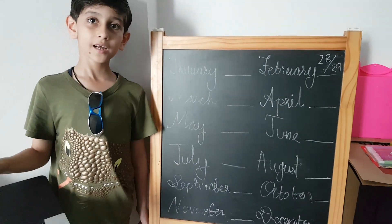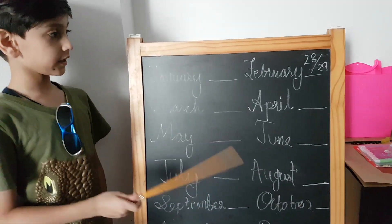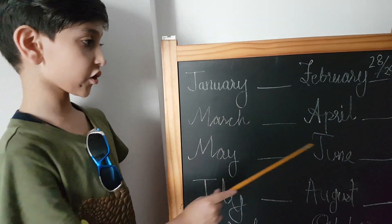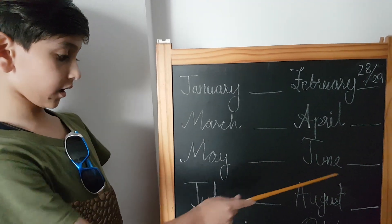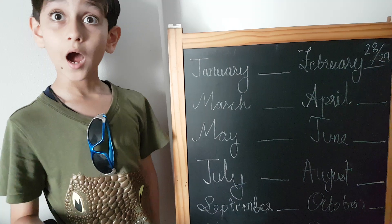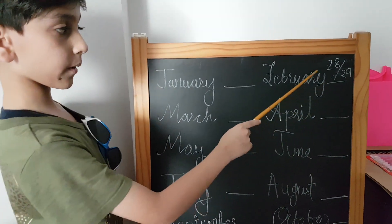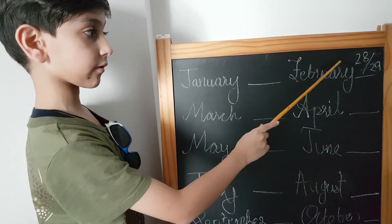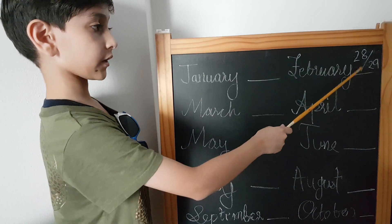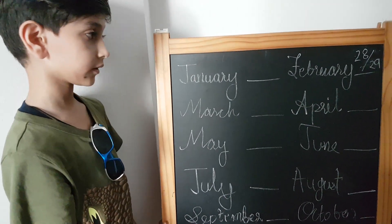Hello friends, I'm Champet. Before we start learning about other numbers, like how many days are there in each month, let's first remember that February has 28 days in a regular year. In a non-leap year, February has 28 days, and in a leap year, it has 29 days.